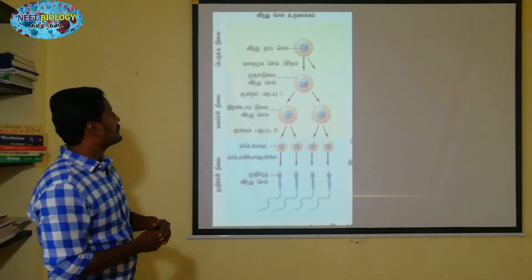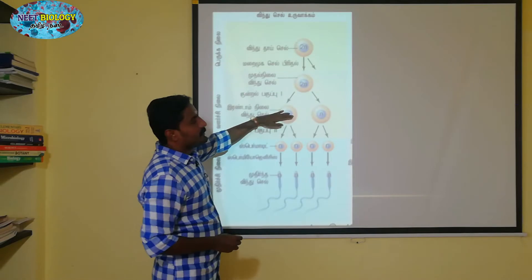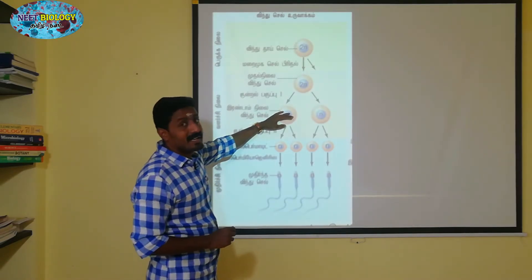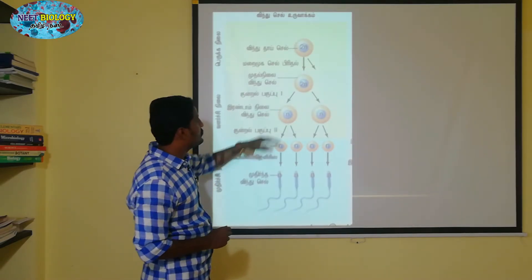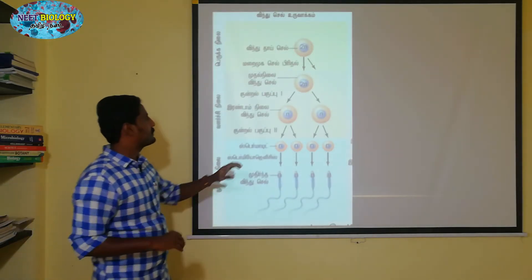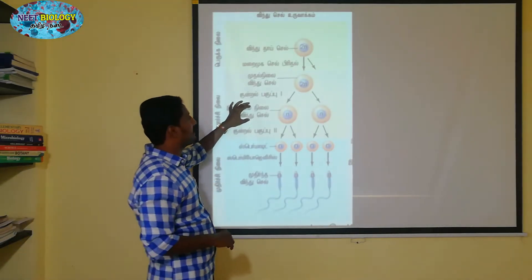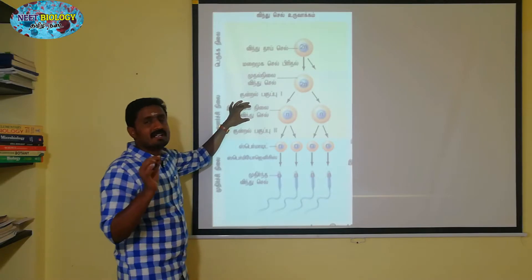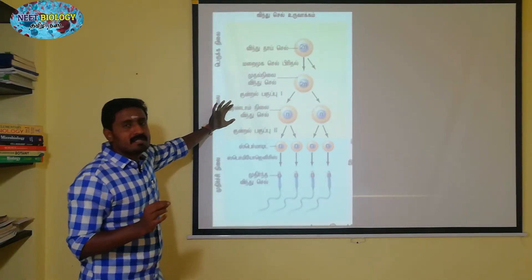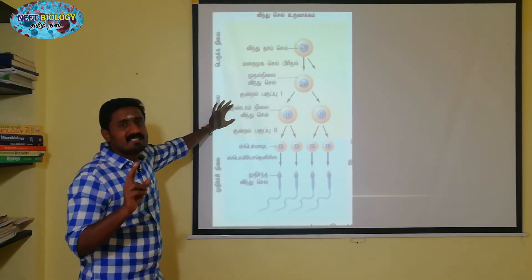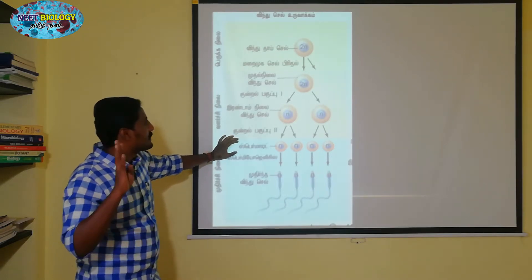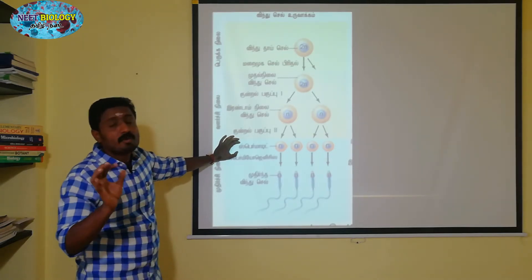Now we will see the next steps in this video. Part 2 — we will see the next three steps. In these three steps, you will see the secondary spermatocytes. The secondary spermatocytes will go through a division in the second meiosis to form four haploid spermatids.